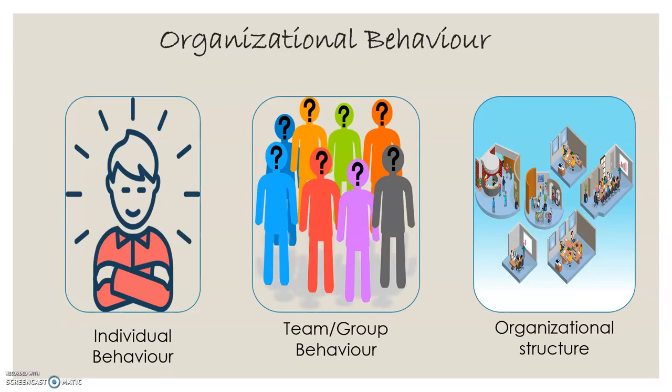The first pillar talks about how people behave individually. The second pillar highlights how people behave when they are put in various groups and teams. The third pillar, organizational structure, discusses how the first two pillars — individuals and groups — behave within the boundaries of organizational structures.